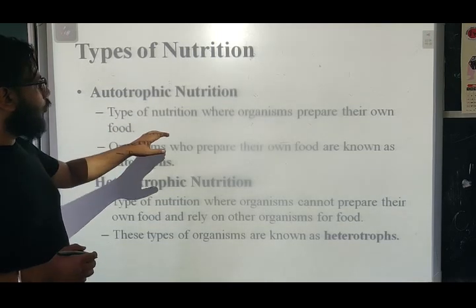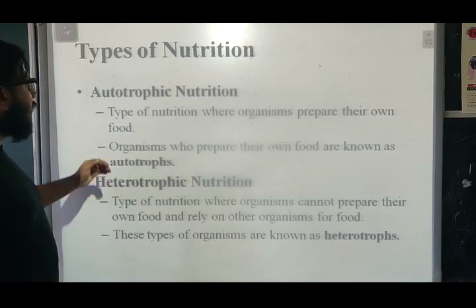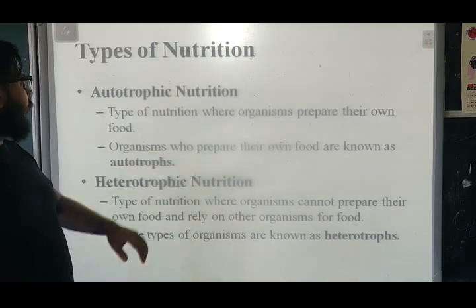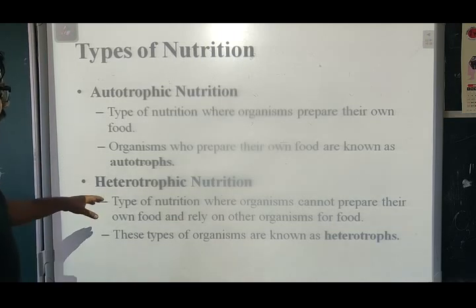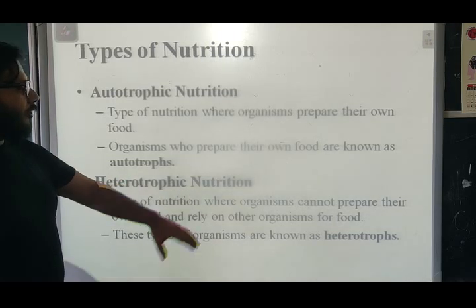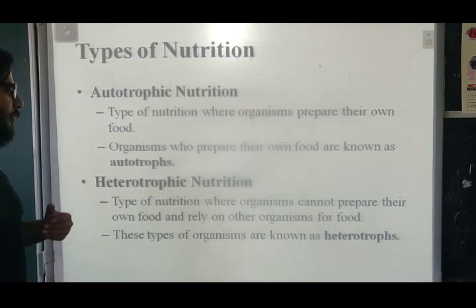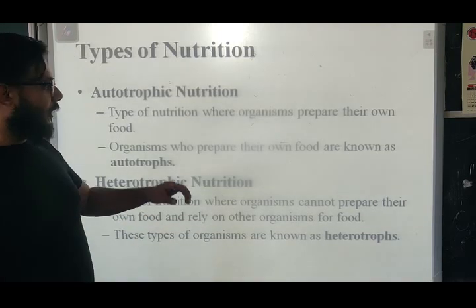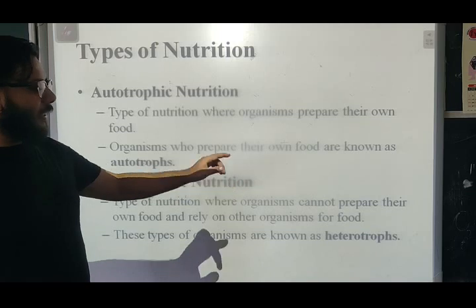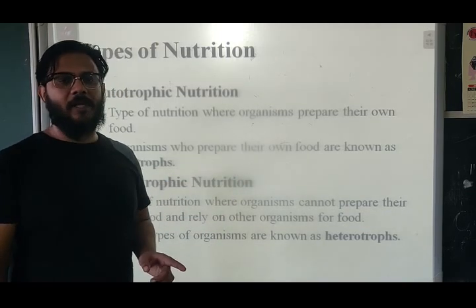Autotrophic nutrition is a type of nutrition where organisms prepare their own food. Organisms who prepare their own food are known as autotrophs. Heterotrophic nutrition is a type of nutrition where organisms cannot prepare their own food and rely on other organisms for food. These organisms are known as heterotrophs.